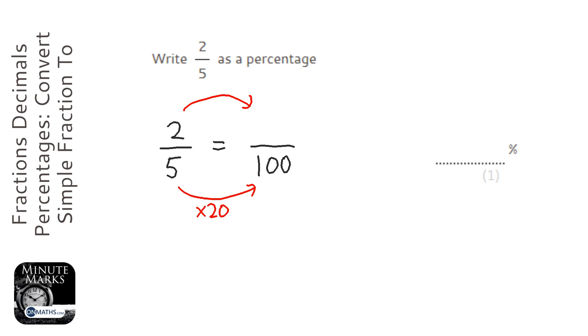You can't add or subtract top and bottom; you can only multiply and divide. So we're multiplying by 20 to get to 100. Whatever I do to the bottom, I've got to do to the top.